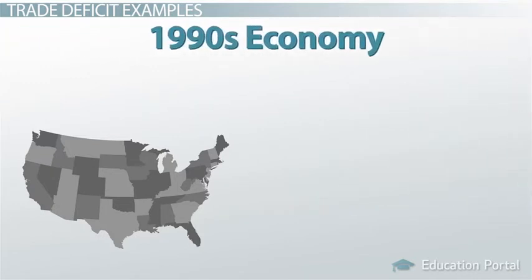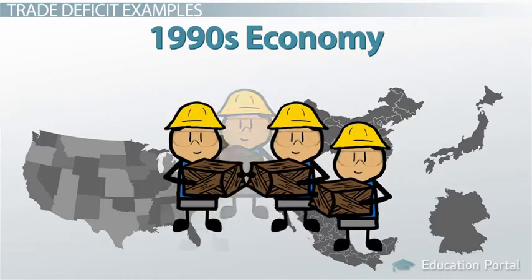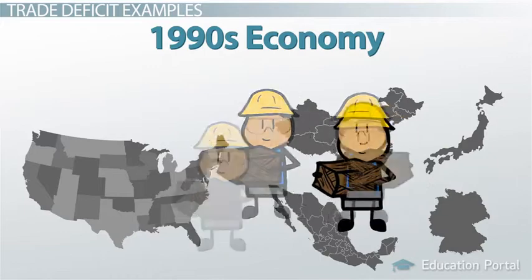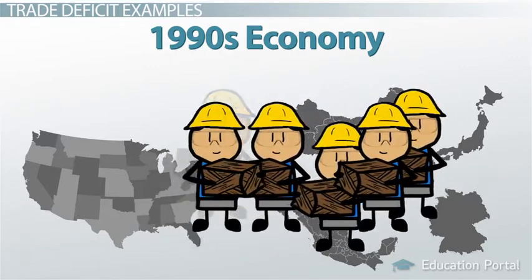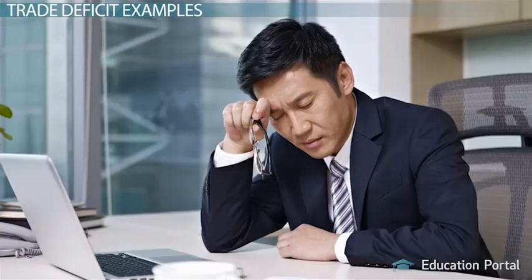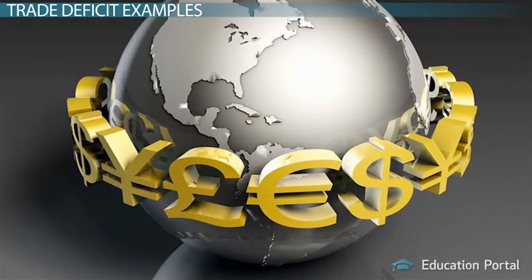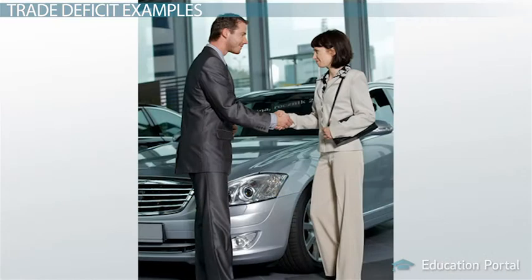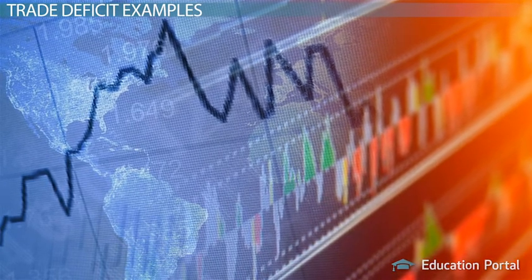The 1990s economy. In the 1990s, the US economy was growing much faster than the economies of America's major trading partners. As a result, Americans were demanding and purchasing foreign goods or imports at a much faster pace than other countries were buying American goods or exports. Additionally, other events like the financial crisis in Asia led to currencies in other countries falling in value, making it much cheaper to buy foreign goods than American goods. Some economists argued that the deficit, which was largely driven by cheap foreign imports, helped prevent inflation.